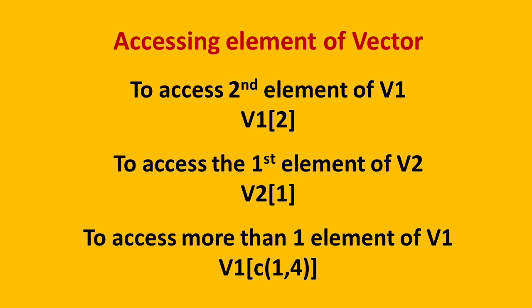Similarly, if we want to access more than one element of any vector, we need to use the c function to access them. Say for example, if we want to access two elements of v1, we need to write v1 square bracket c function and pass the element reference inside the c function to access them.